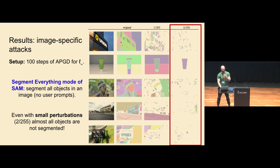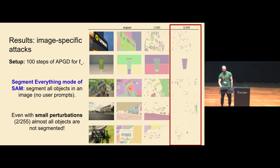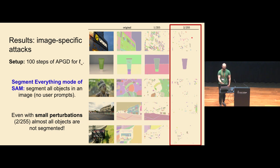Here are a set of images showing predicted masks before any perturbation, and here are the predicted masks when adding perturbations of size 1/255 or 2/255 — very small, not really perceptible for any image. We see that basically the model is no longer able to segment almost any object inside these images. And clearly, if you go higher, you can destroy everything.